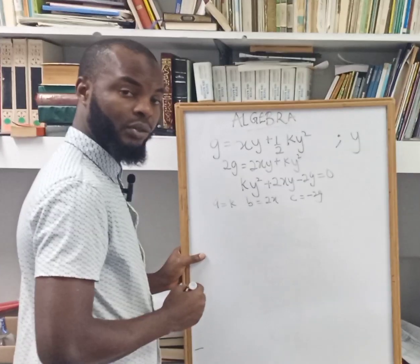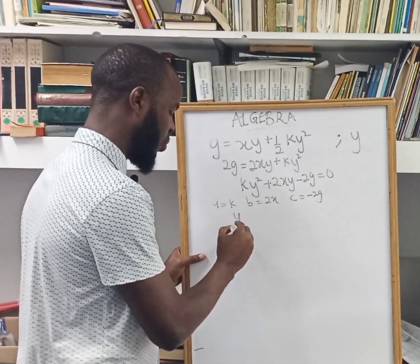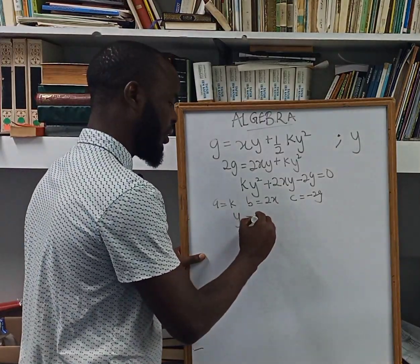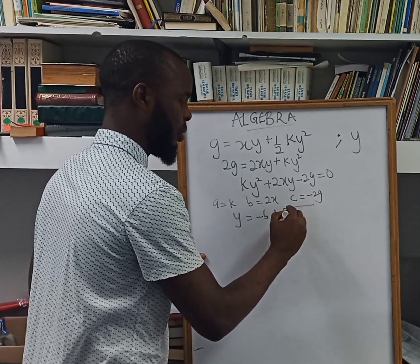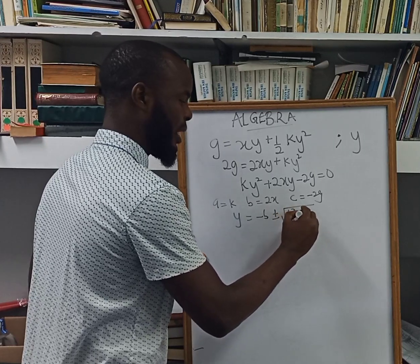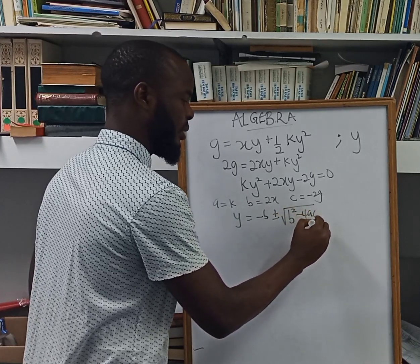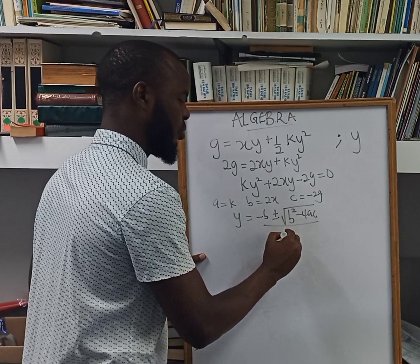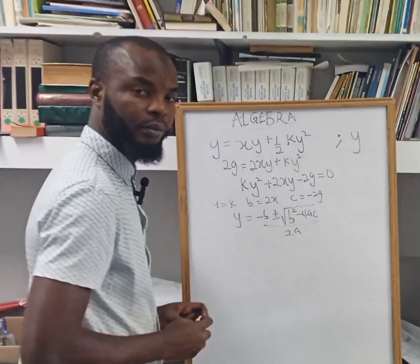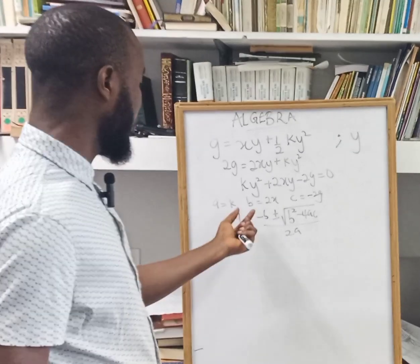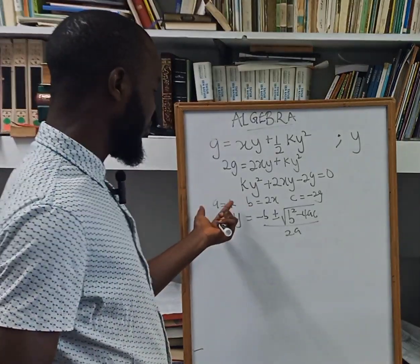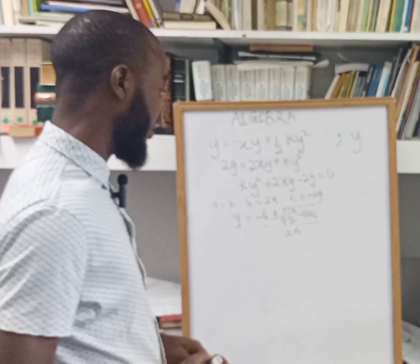So using the quadratic formula approach, here y is going to be minus b plus or minus root b squared minus 4ac over 2a. So with this, we need to plug in what the values of a is, b is, and also what c is.